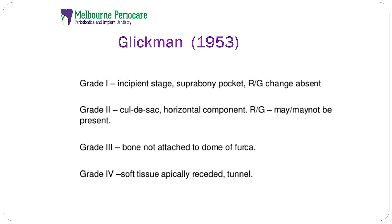Grade two was like a cul-de-sac defect and radiographic evidence was present in most cases. Grade three was a step further — the bone had completely been lost from the dome of the furcation, so it was almost a through-and-through bone loss. Grade four was the same as grade three, but there was also soft tissue recession, so the gums had receded, creating a tunnel.